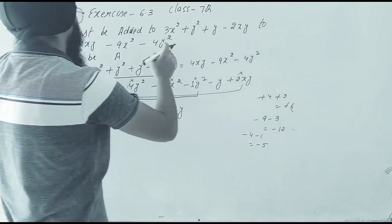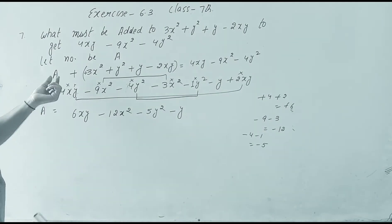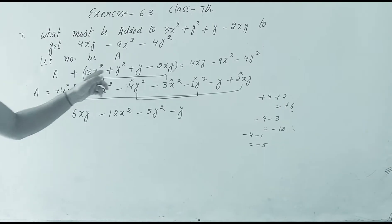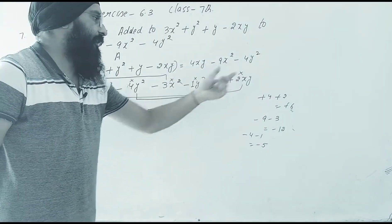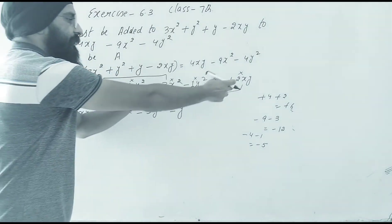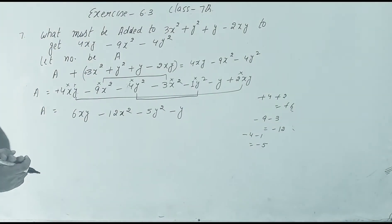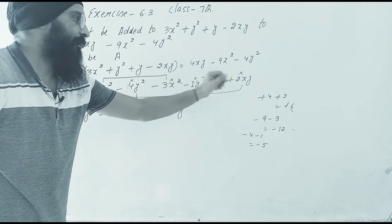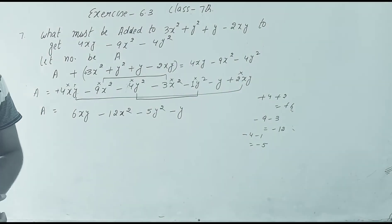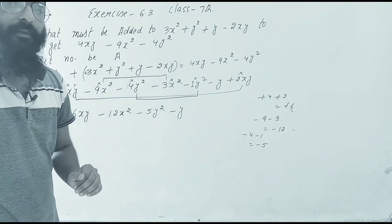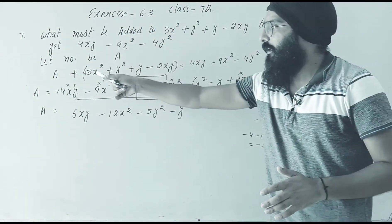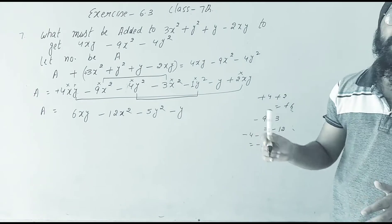I hope that question is understood. The whole expression on the right side: we change plus to minus and minus to plus for like terms. The final answer is 6xy - 12x² - 5y² - y.